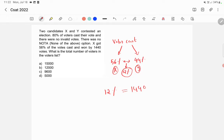12% of what? 12% of votes cast. That means 12 by 100 into votes cast is equal to 1440. So total votes cast is equal to 1440 into 100 by 12. This is 12,000. This is 12,000.